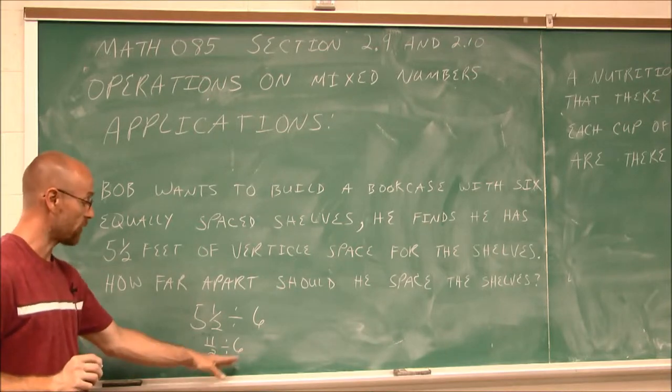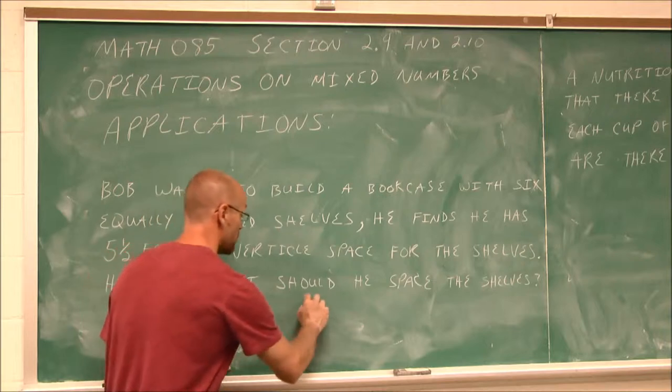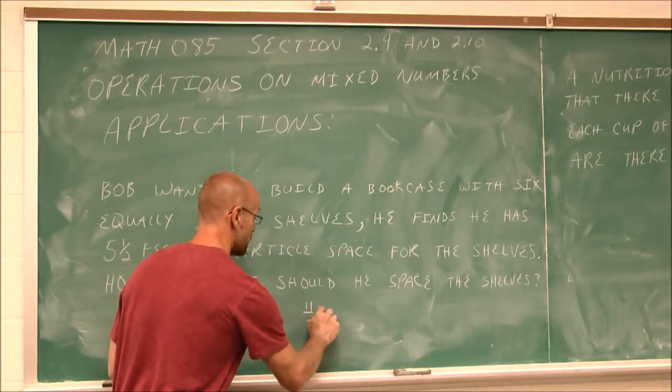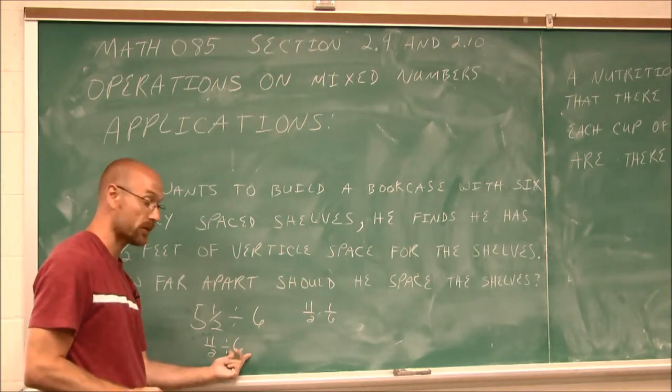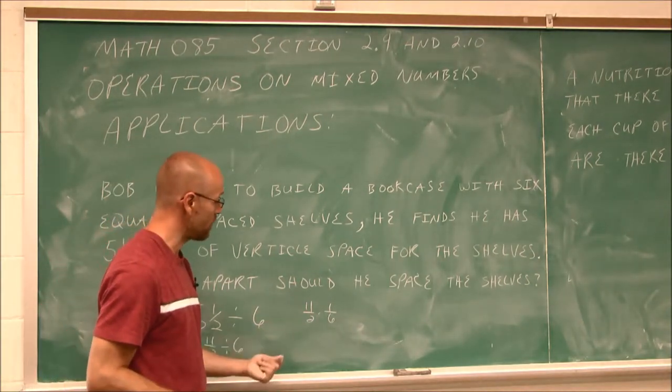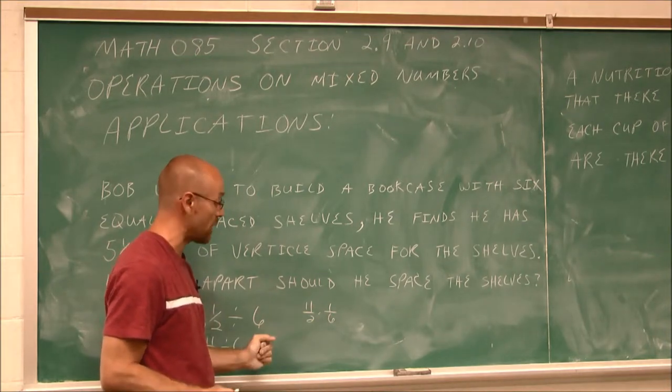And when we divide fractions, we multiply by its reciprocal. So it's going to be 11/2 times 1/6, the reciprocal of 6. And now I can do that multiplication. There's no reducing I can do here. 11 and 6 have no common factors. And 1 and 2 have no common factors.